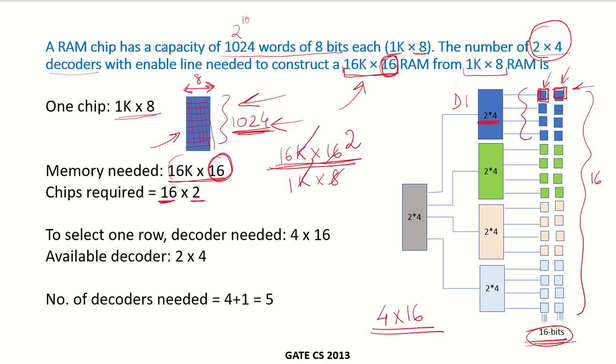This is decoder 1, it can choose between these 4 rows. Decoder 2 can choose between these 4 rows, decoder 3 can choose between these rows, and decoder 4 can choose between these rows. 4 decoders over here, and now to choose between these 4 decoders, we need another decoder which will be able to tell which particular decoder we need to enable. It would either be D1 or D2 or D3 or D4. That is why we require 4 plus 1, which is 5 number of total 2 by 4 decoders.